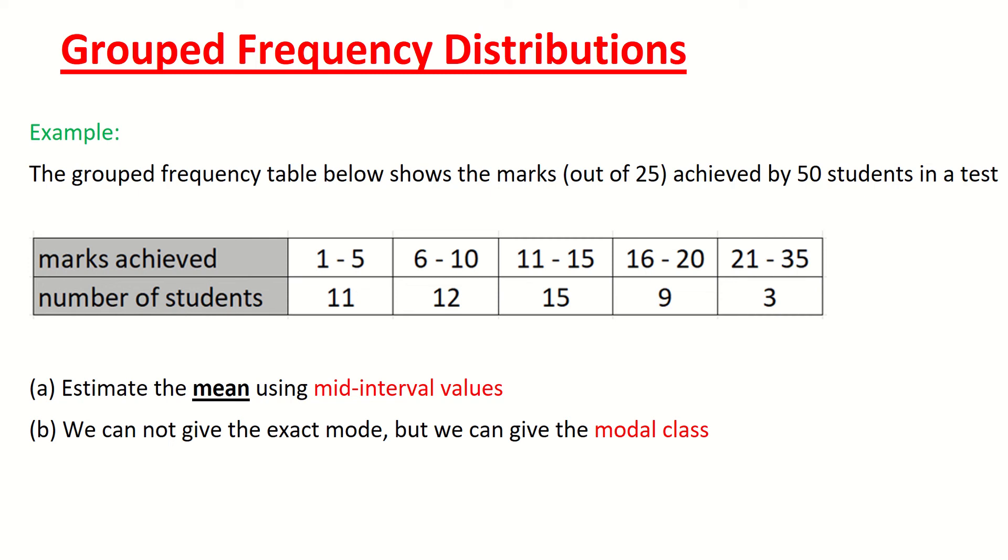Our example here is looking at the grouped frequency table below shows the marks out of 25 achieved by 50 students in a test. The marks achieved are from 1 to 35 but they're broken into categories from 1 mark to 5 marks and 6 marks to 10, then from 11 to 15, 16 to 20 marks, and 21 marks to 35 marks.